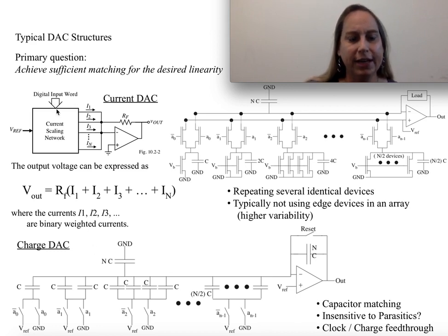Now, the current DAC is very much, you imagine I have an input word here, and what I'm doing is, maybe I have some reference voltage I get to work with, either explicitly or implicitly put into this. But it's basically going to be a current scaling network that's going to give me a whole bunch of output currents. I can then sum them up, because Kirchhoff's current law.